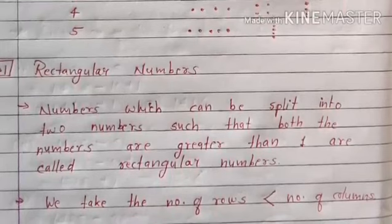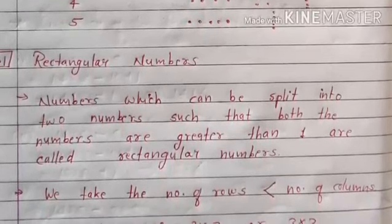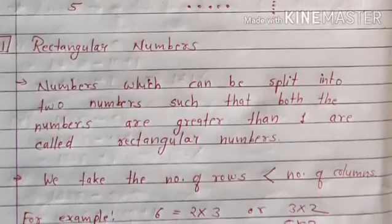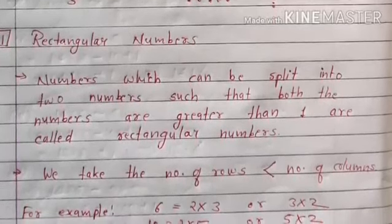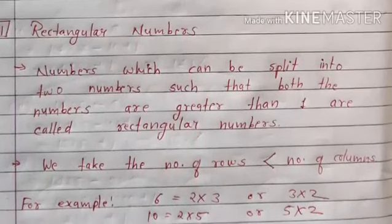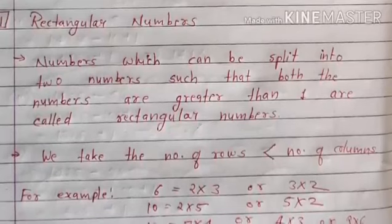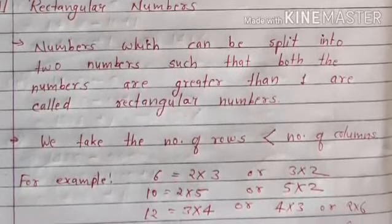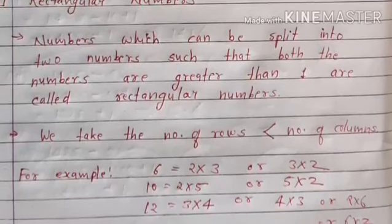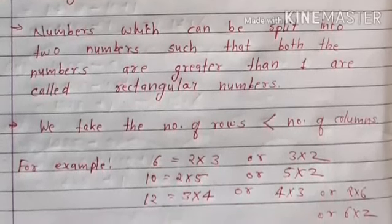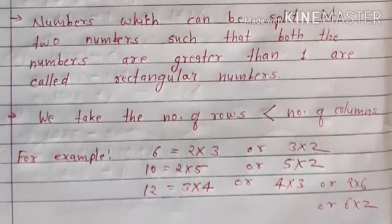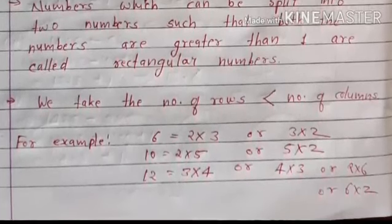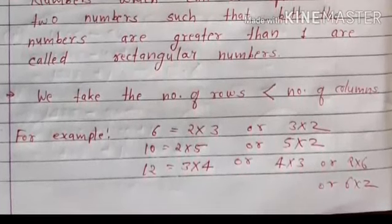Rectangle में number of rows, number of columns से कम होते हैं। Example: 6 = 2 × 3, यहाँ 2 rows और 3 columns हैं। 10 को 2 × 5 या 5 × 2 लिख सकते हैं। 12 को 3 × 4, 4 × 3, 2 × 6, या 6 × 2 लिख सकते हैं। इस तरह हम rectangular numbers show करते हैं।